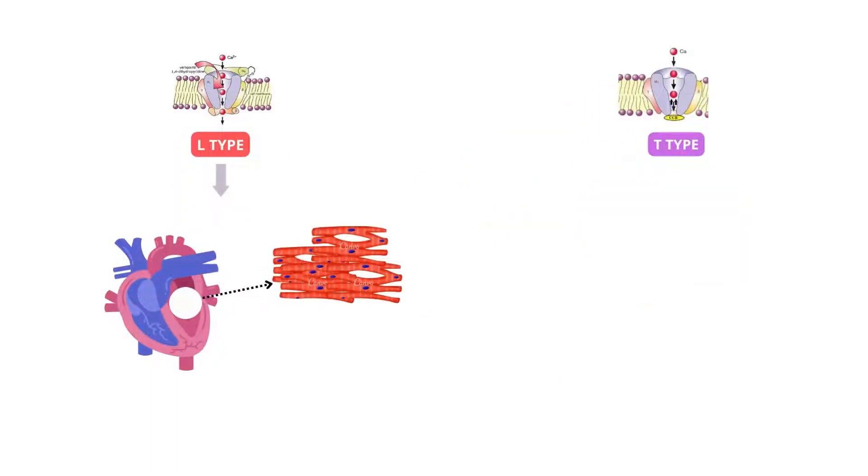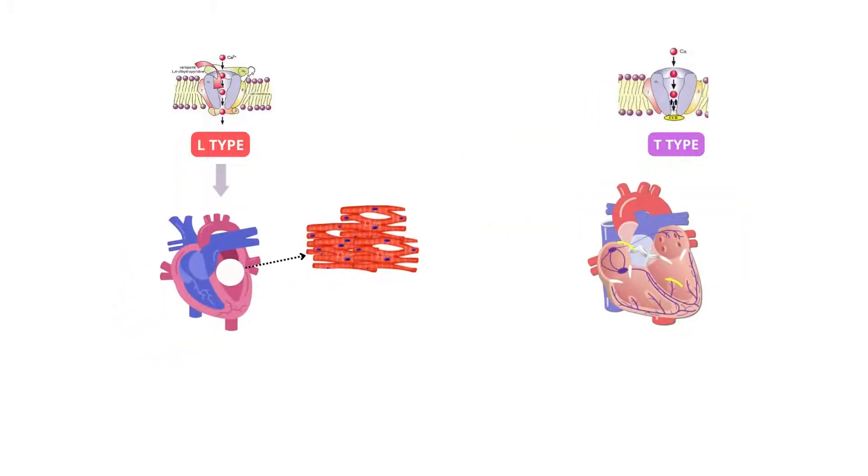All cardiac cells include L-type channels, while Purkinje, pacemaker, and atrial cells have T-type channels. Both of these channels play a role in pacemaker activity and atrioventricular conduction.